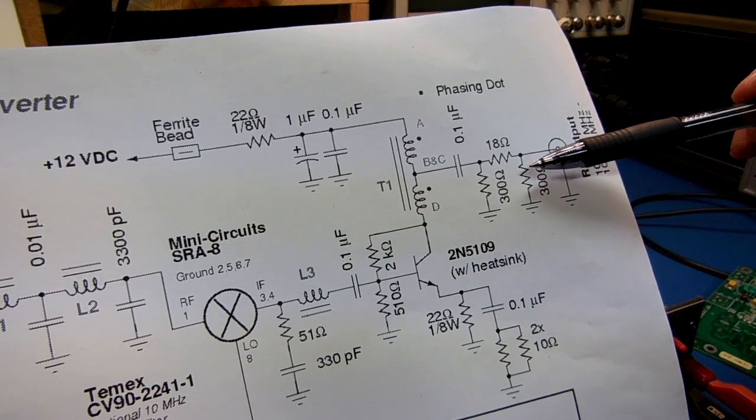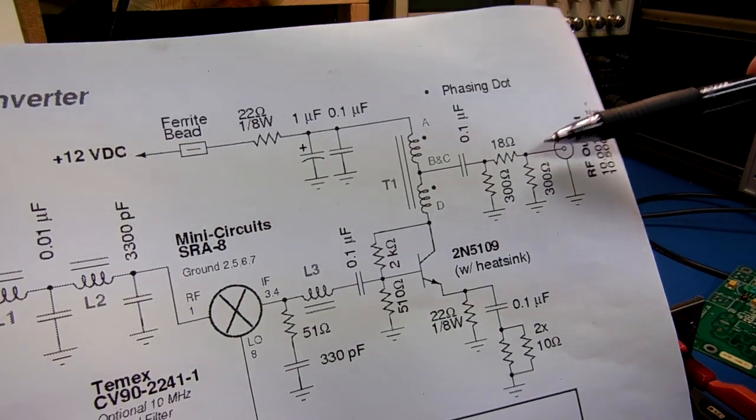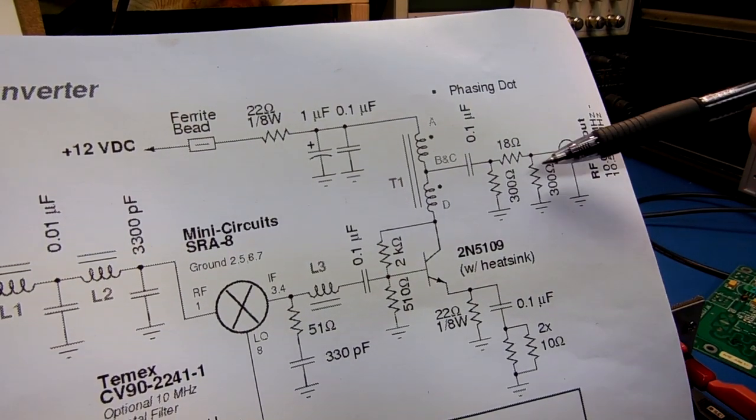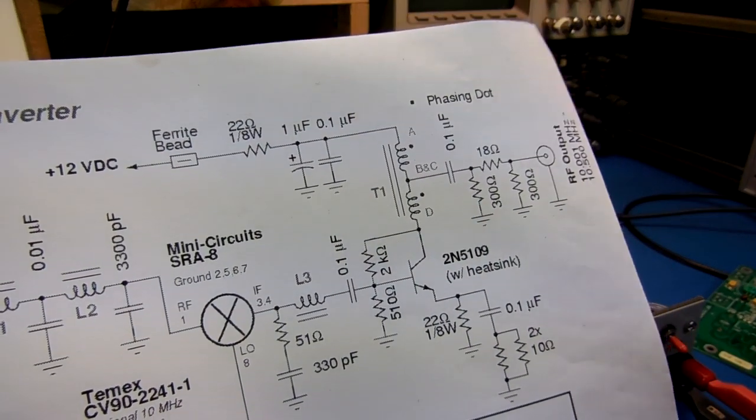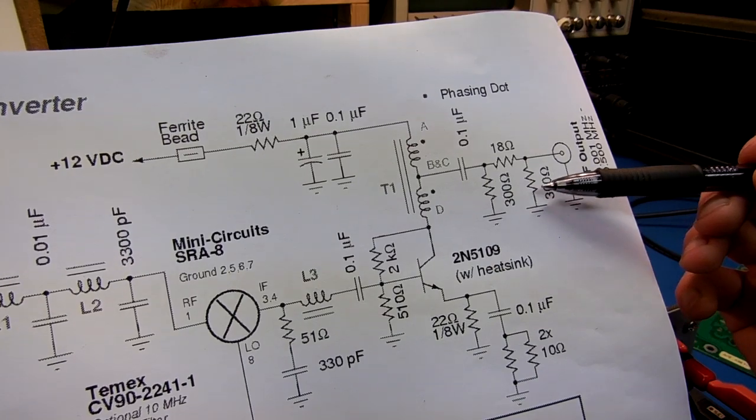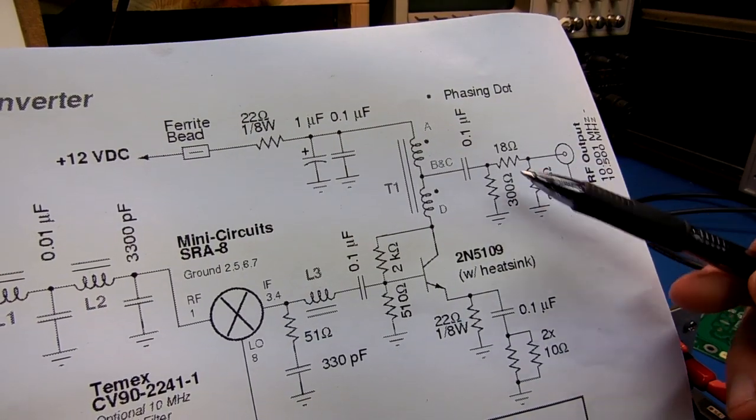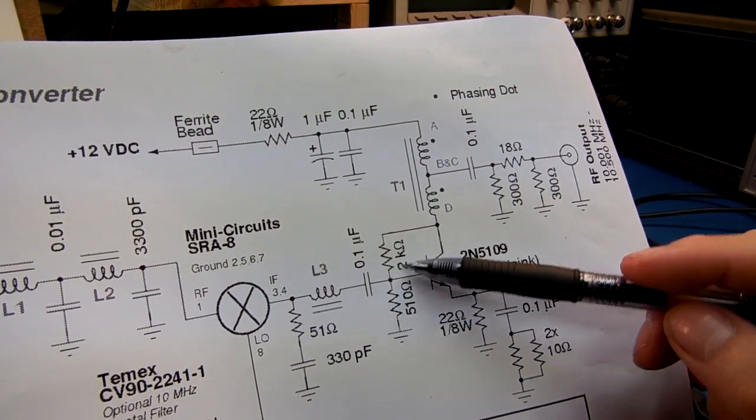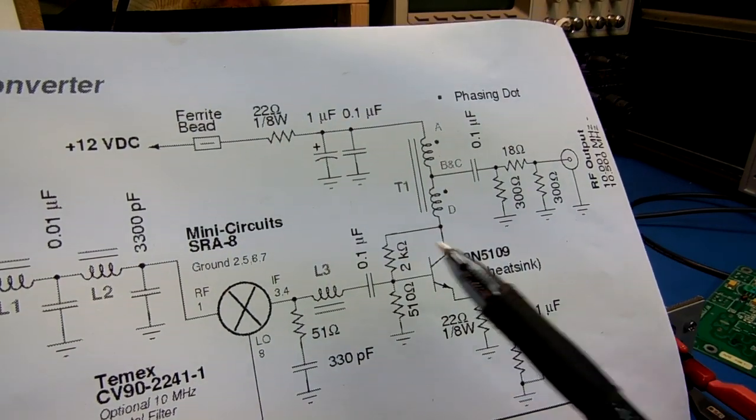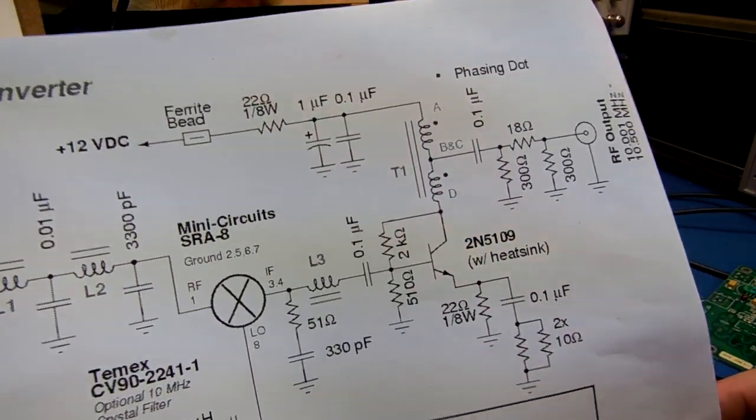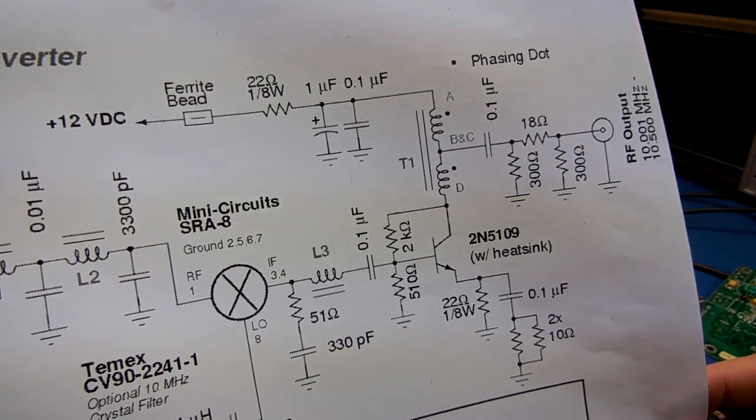You see we have either a 3 or 6 dB, I think it's a 3 dB attenuator on the output. So that kind of forces everything, the output to 50 ohms, and the feedback kind of converts that 50 ohms on the input to the IF amplifier, so everything sees a 50 ohm load throughout the entire amplifier.